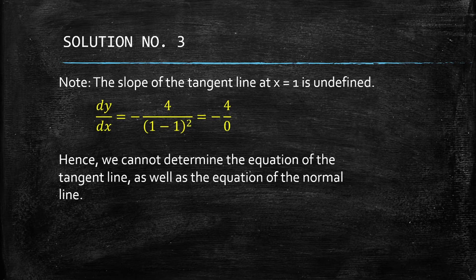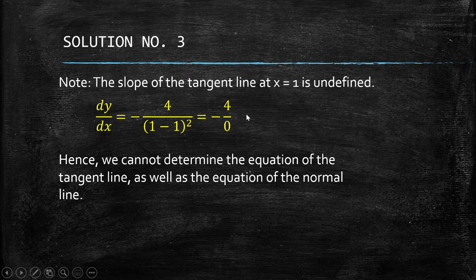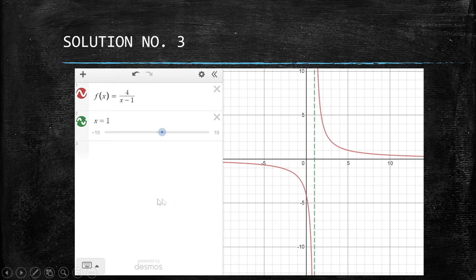Since the slope is undefined, we cannot determine the equation of the tangent line or the normal line. Looking at the graph, at x = 1 there is no output — x = 1 is the vertical asymptote of the function. The function is discontinuous at this point, so we cannot find the tangent or normal line.